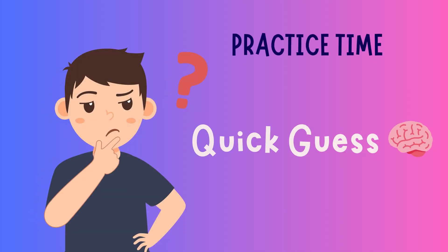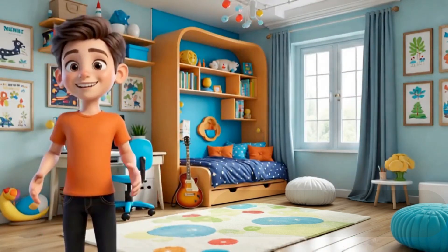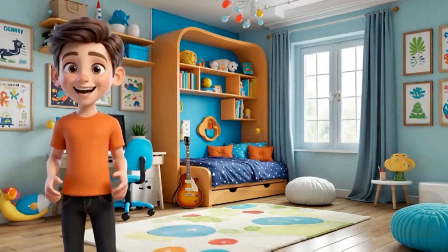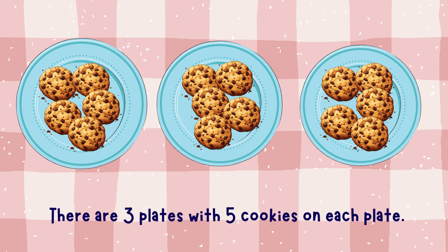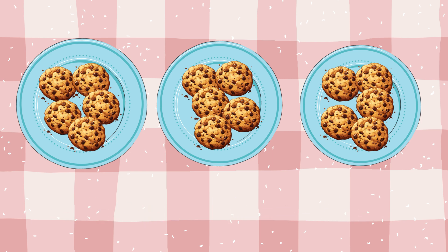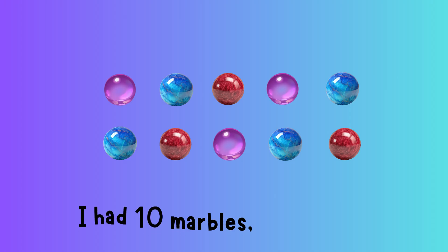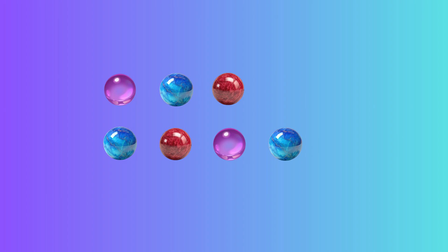Practice time — let's play Guess the Operation. I'll read a problem and you decide if it's multiplication or not. There are three plates with five cookies on each plate. Multiply! Three times five equals fifteen. I had ten marbles and I lost three. That's subtraction, not multiplication.